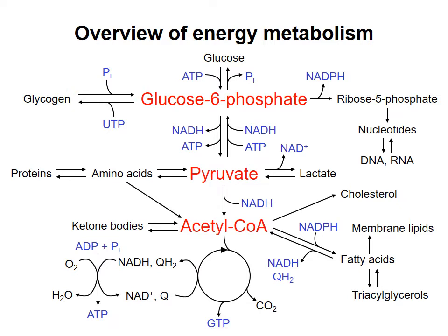Before we get into the details, I want to be clear that the monosaccharide glucose is a major source of energy, or ATP, for cells. Glucose can be broken down to provide energy through glycolysis, the citric acid cycle, and oxidative phosphorylation. Glucose 6-phosphate, or G6P, is simply glucose with an added phosphate, and so G6P also represents energy to the cell.